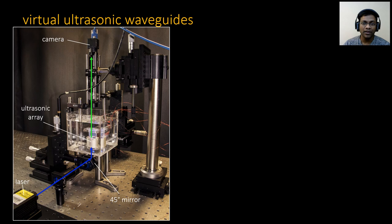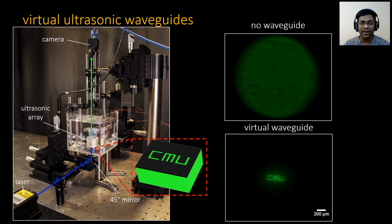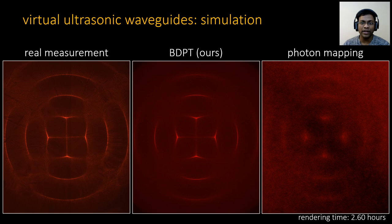On the left we show an experimental setup we have built. With ultrasound off, we can see a completely diffused image, and with ultrasound on, the tissue becomes continuously refractive and the photons are threaded through the scattering medium.